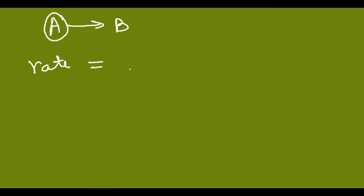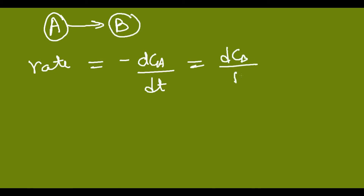Suppose I have a reaction A giving B. The rate of this reaction can be expressed as the rate at which A is decomposing, which is −dCa/dt, or as the rate at which B is forming, which is +dCb/dt. The minus sign indicates that A is decreasing as time goes on, since A is being converted into B.